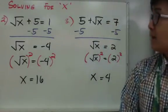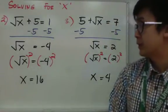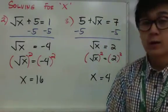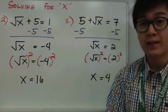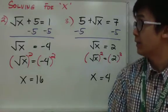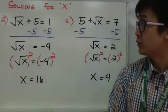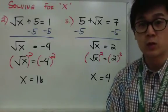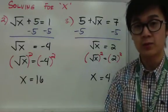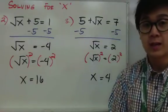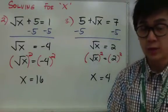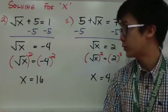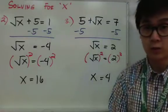Now in the second example, similar to example number 1, the goal is to have x by itself. For number 2, square root of x plus 5 is equal to 1. To get rid of 5, you subtract 5 on both sides, and we are left with square root of x equal to negative 4.